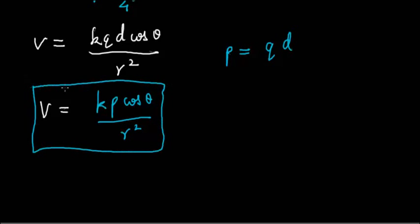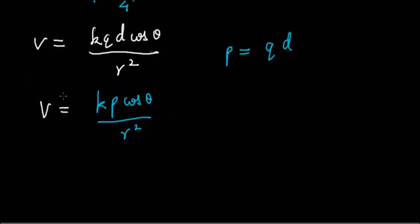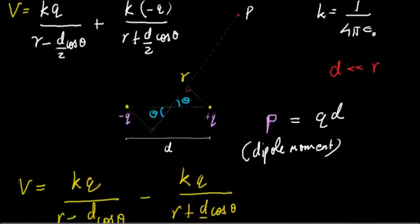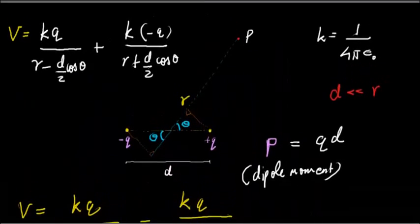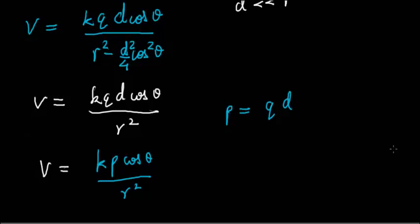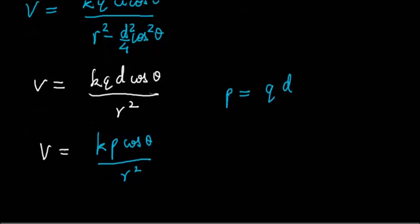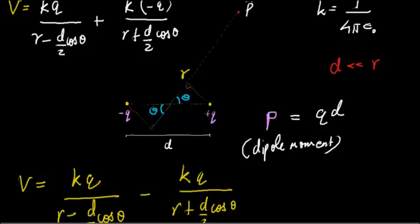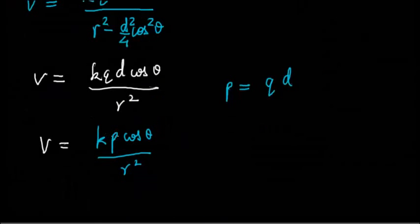This is where most people end the derivation of the potential due to a dipole at a point P, which is at a distance r from the midpoint of the line joining the dipoles, using that approximation. In the next video, we'll discuss how to find the electric field at point P. I hope you liked it.